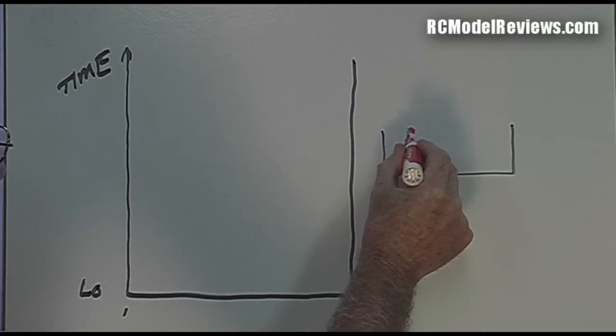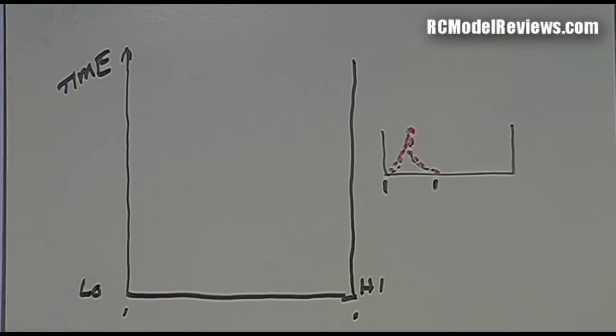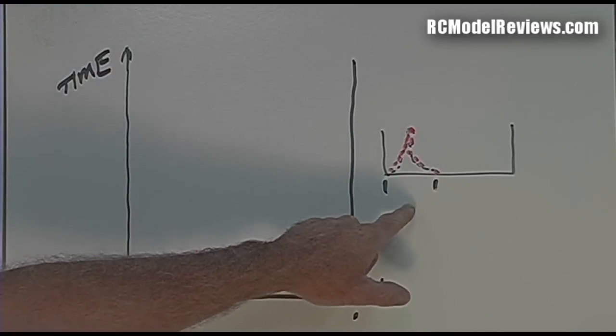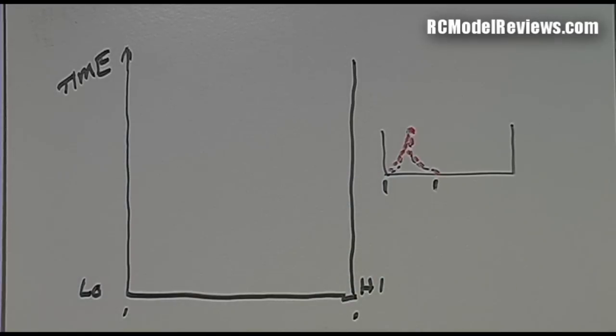Because as we well know in the case of spread spectrum, we can have another signal sitting right on top of our original signal and they'll both work together, which seems really odd. Because remember the old 72 meg days, if you had someone on channel 13 and someone else turned on channel 13, then you both fell out of the sky.